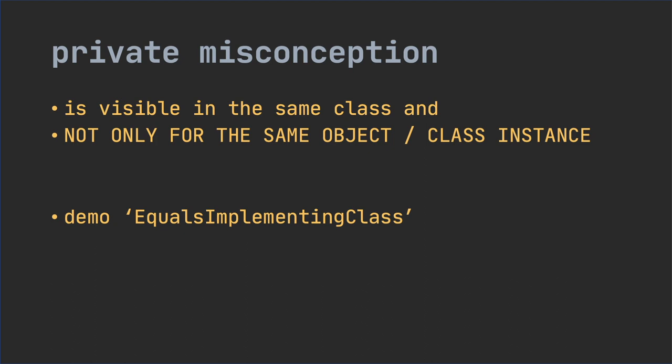The same is true for private methods, with the small correction that in this case we cannot talk about reading and modification — the operation for a method is invocation. In other words, we can call the private method on the other object.